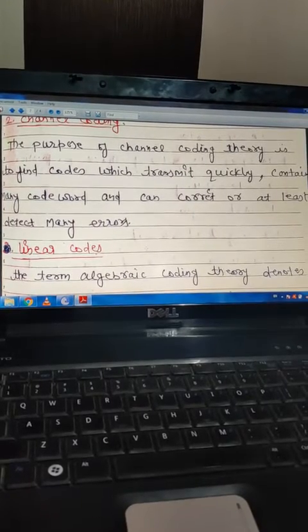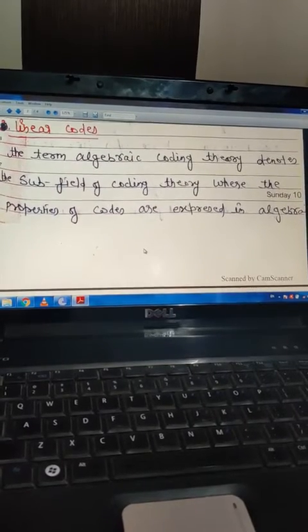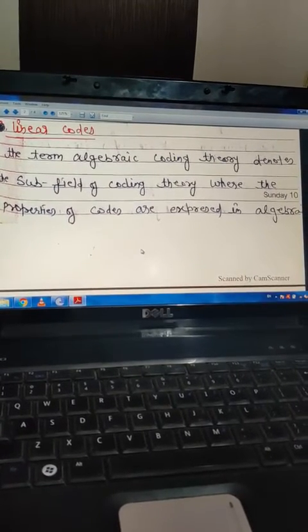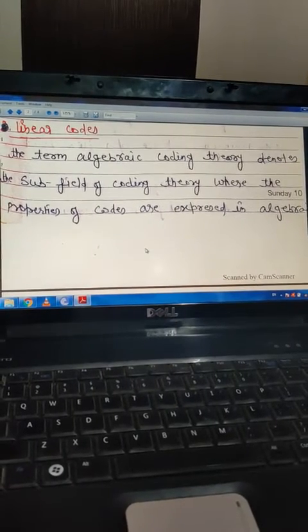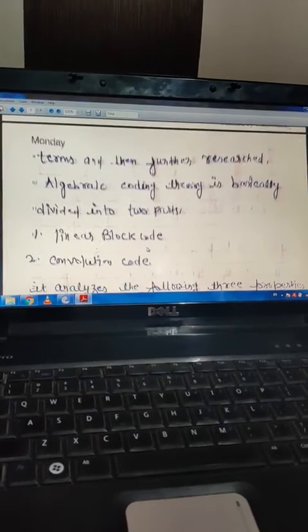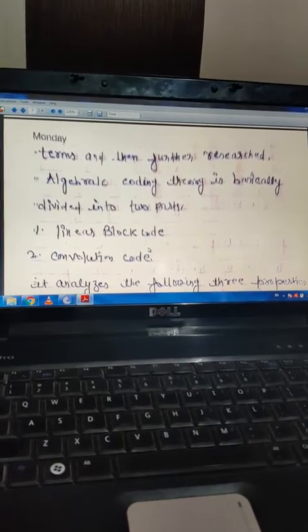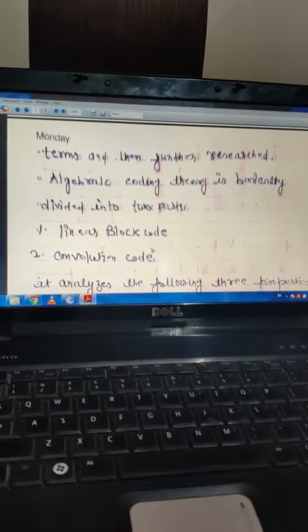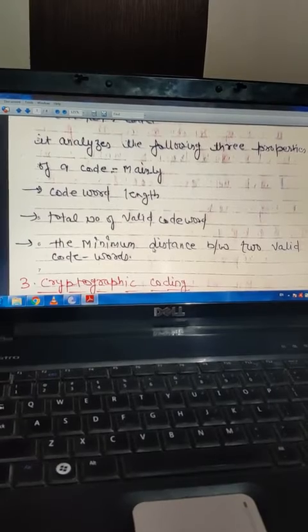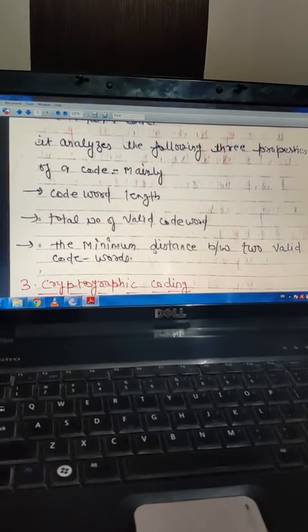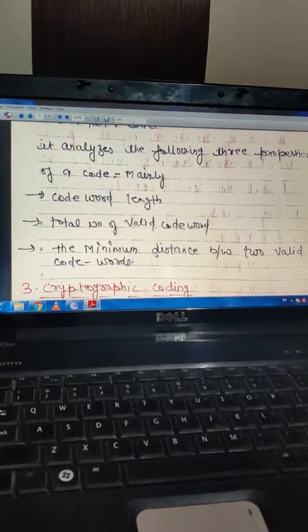Third one is linear code. In terms of algebraic coding theory, it denotes the subfield of coding theory where the properties of codes are explained in algebraic terms. Algebraic coding is basically divided into two parts: linear block code and convolution code. There are three properties for a code: code word length, total number of valid code words, and the minimum distance between two valid code words.